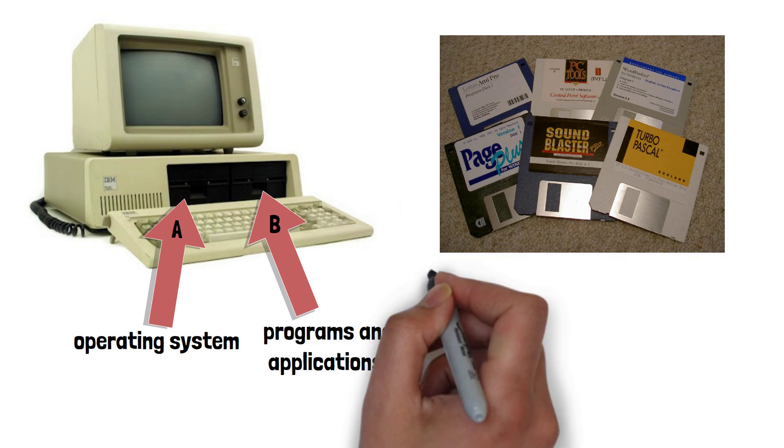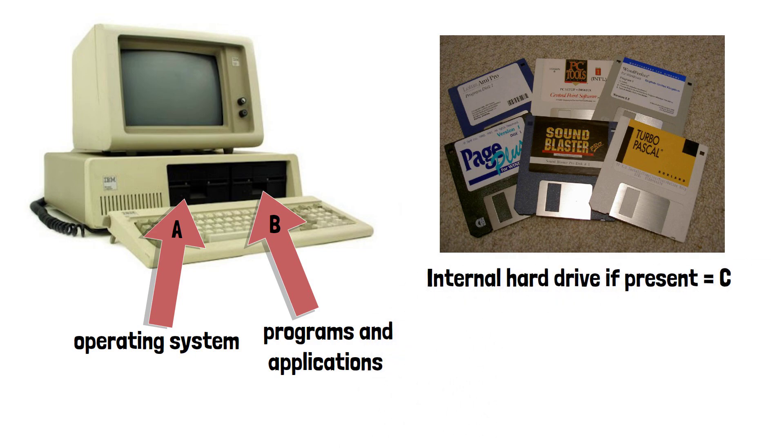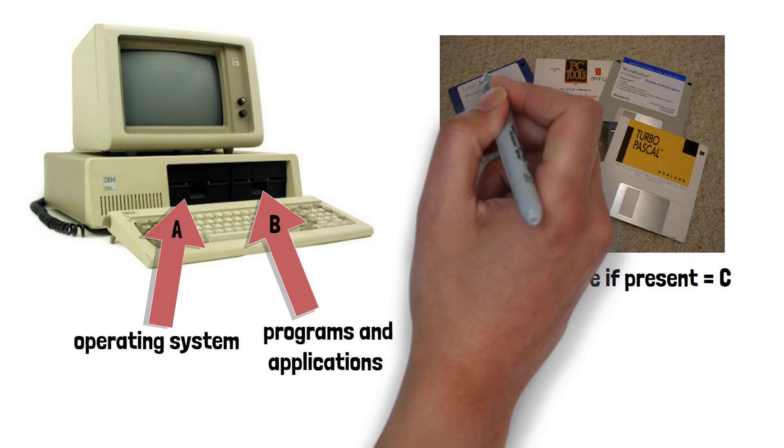In the case of the user having an internal hard drive, this would be the C drive by default, as we have today. So that's what the A and B drive were originally used for, but in today's world we don't use floppy disks,